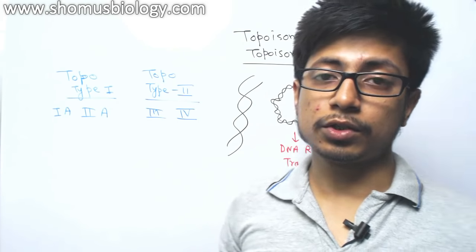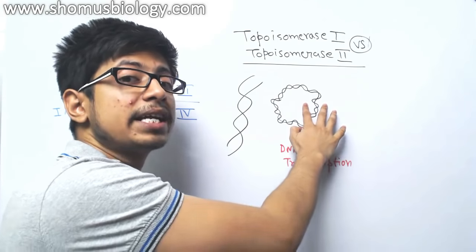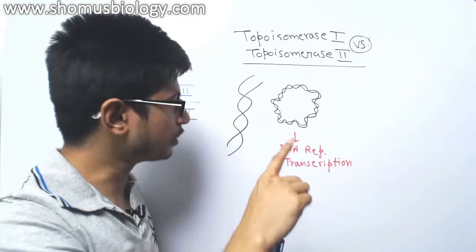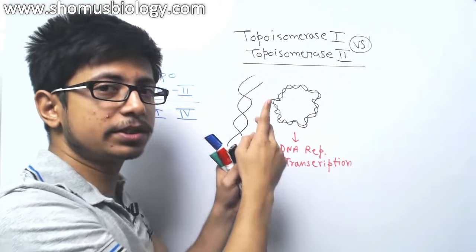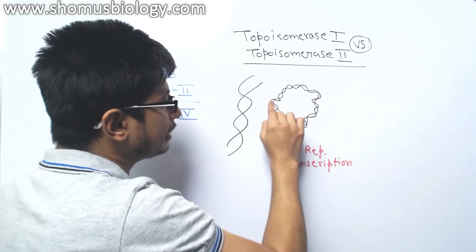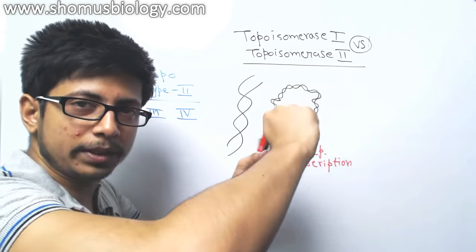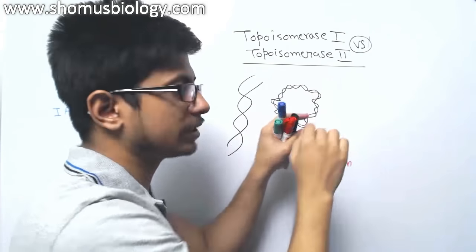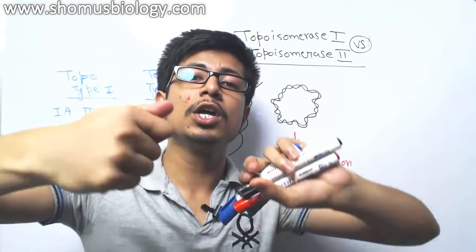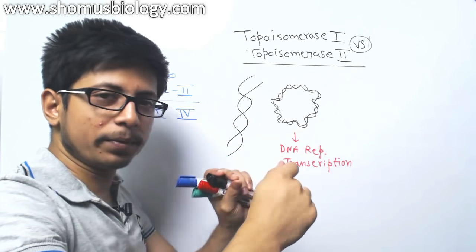That is when a problem is created. We need to unwind the DNA to separate the two DNA strands from each other. Before that, we need to untwist the DNA first because it is a twisted ladder. We need to untwist it to make a straight format, then we can separate the strands. If you think of the DNA as a rope, you would turn it in the opposite direction so those linking regions open up and straighten.